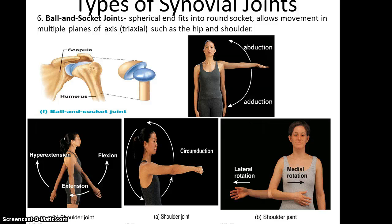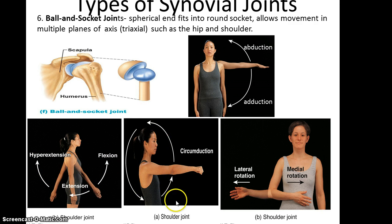Ball and socket joints have a large spherical end fitting into a round socket, though usually the spherical end is a bit larger than the socket. This allows for movement in multiple planes — triaxial movement. The two best examples are the hip joint and the shoulder joint. With a ball and socket joint you get abduction and adduction, flexion, extension, and hyperextension, circumduction, and lateral and medial rotation of the arm — so a lot of possible movements. And that's it for this part of the lecture.